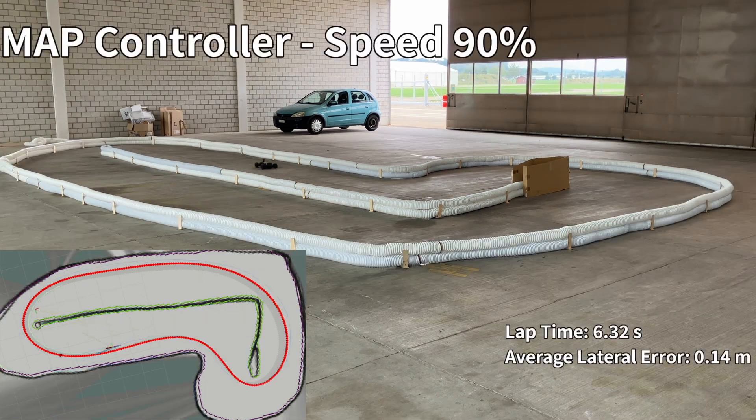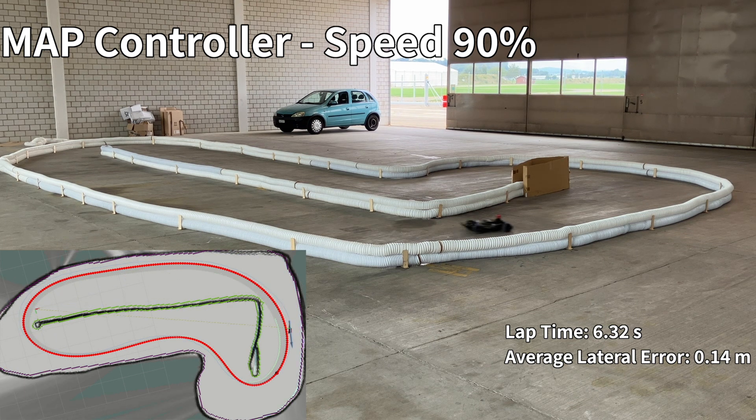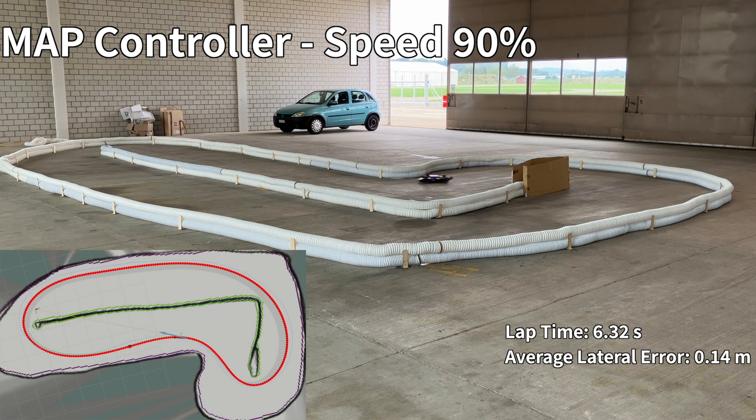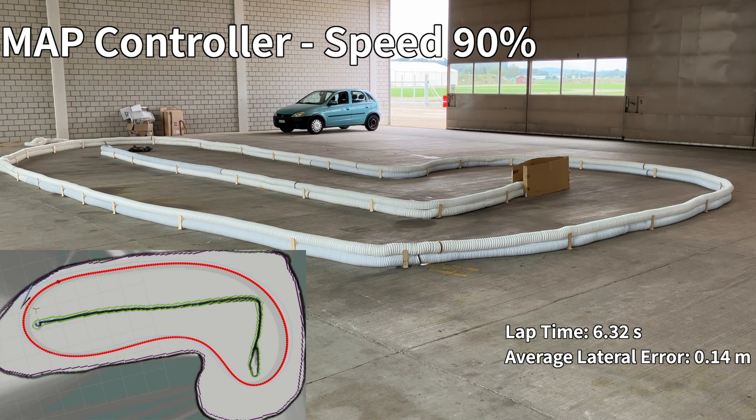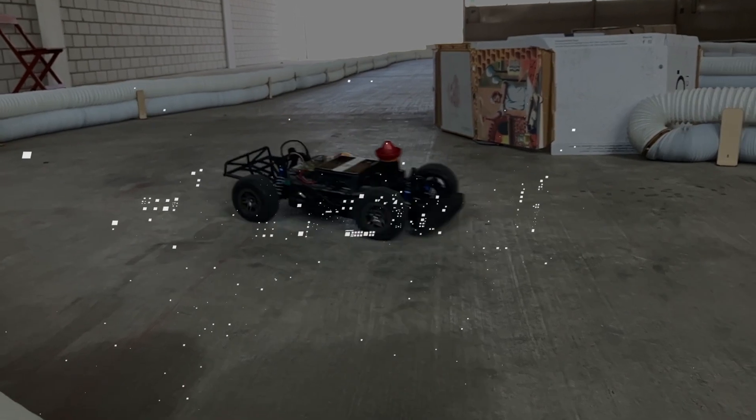The MAP controller, on the other hand, is able to track the trajectory at the desired velocity and successfully completes multiple laps.